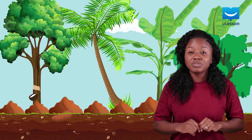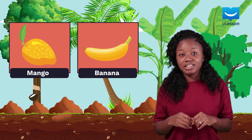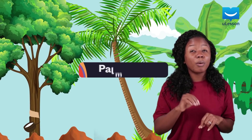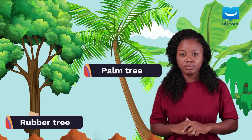Examples include mango, banana, apple, oil palm, and rubber trees.